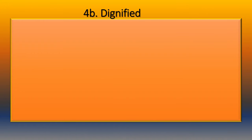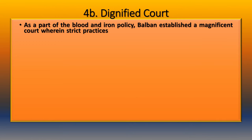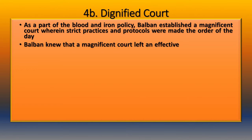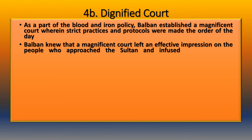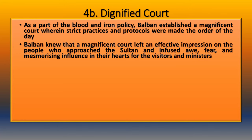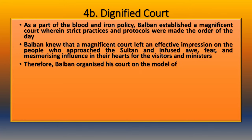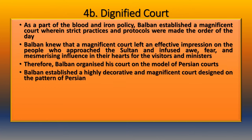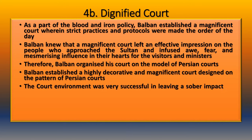As part of the blood and iron policy, Balban established a magnificent court wherein strict practices and protocols were made the order of the day. Balban knew that a magnificent court left an effective impression on visitors, infusing awe, fear, and mesmerizing influence in their hearts. Therefore, Balban organized his court on the model of Persian courts — highly decorative and designed to leave a sober impact on the minds of visitors. Balban always attended his court in an impressive style.